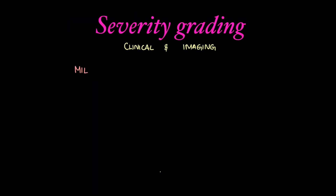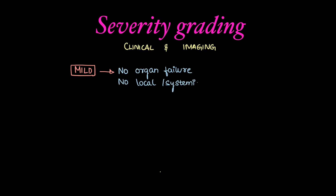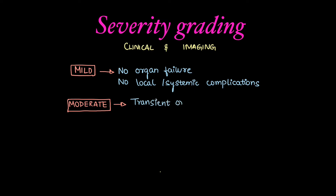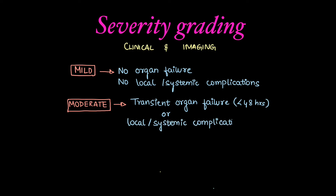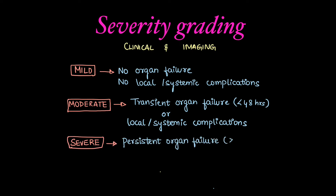Severity grading is done on both clinical and imaging findings. Mild grade has no organ failure and no local or systemic complications. Moderate grade has transient organ failure lasting less than 48 hours, or local/systemic complications. Severe grade has persistent organ failure continuing for more than 48 hours, with or without local or systemic complications.